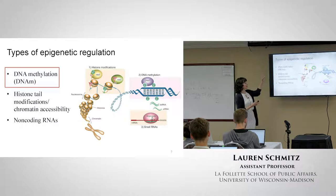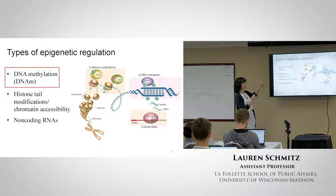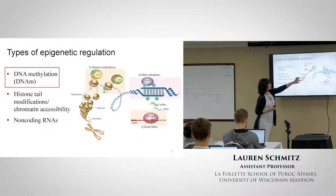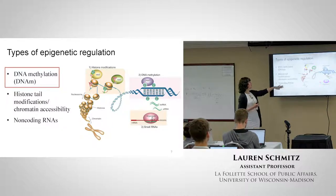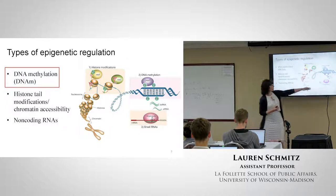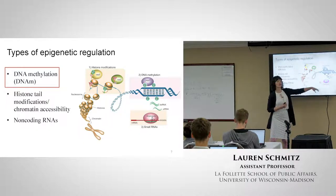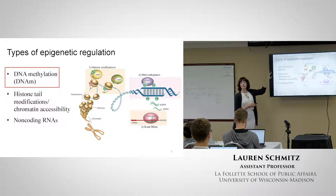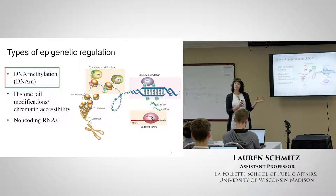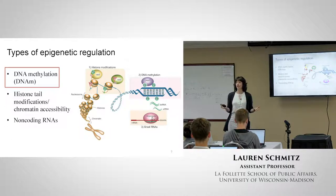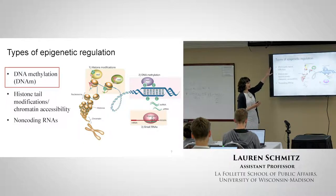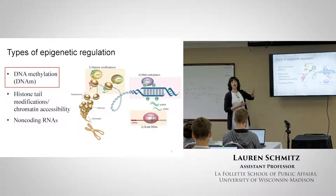Types of epigenetic regulation - Andrea touched on all of these. DNA methylation; histone tail modifications or chromatin accessibility, which is the wrapping of DNA around nucleosomes, then into chromatin and then into a chromosome so it can all fit into the nucleus; and non-coding RNAs that have epigenetic function and can block the transcription of genes by binding to them. Today we're mostly going to be talking about DNA methylation because that's really the most well-studied epigenetic process and it's much easier to collect data on, especially for larger cohort studies.